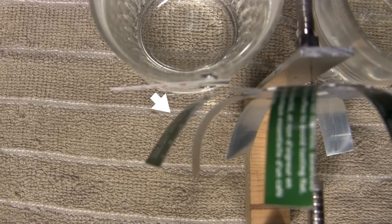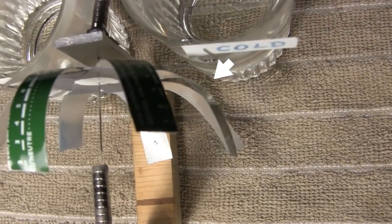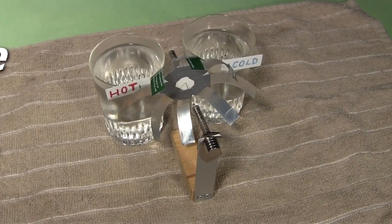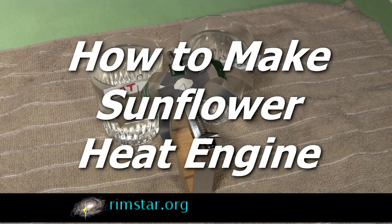You can see the petals straighten out in the hot air and curl back up in the cold air, making it an unbalanced wheel that keeps on rotating. It's pretty simple to make, and in this video I'll show you how.